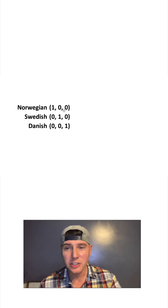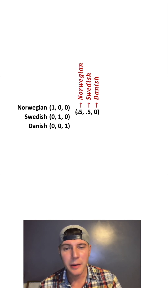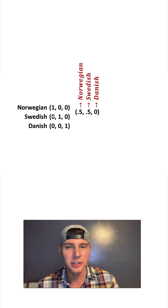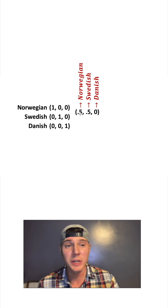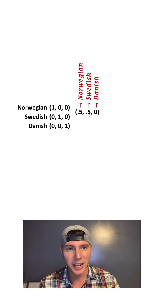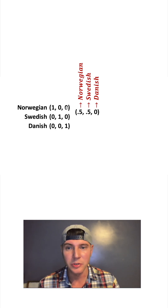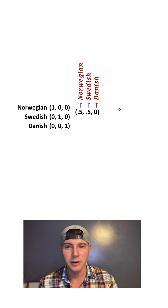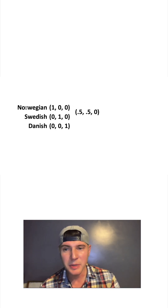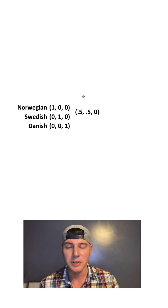We're going to have the Norwegian person and the Swedish person have a baby. To figure out how much Norwegian, we do 1 plus 0 divided by 2, which is one-half. To find out how much Swedish, we do 0 plus 1 divided by 2 — that's also one-half. And for Danish, we do 0 plus 0 divided by 2, which is 0. So this baby is half Norwegian, half Swedish.